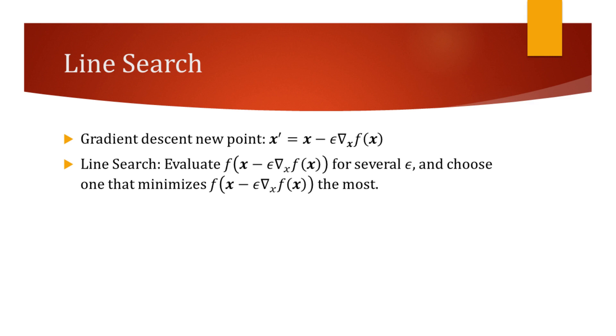Line search is a way of evaluating the function for different values of epsilon and choosing the one that minimizes the function the most.